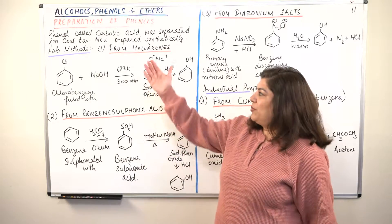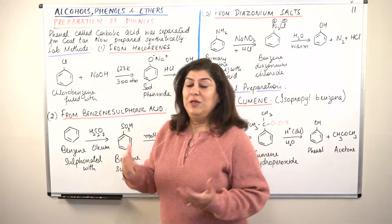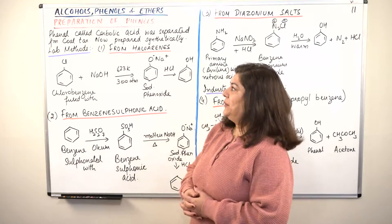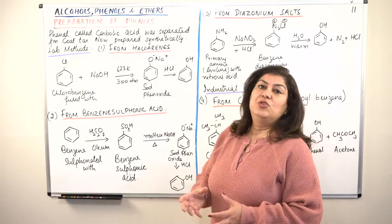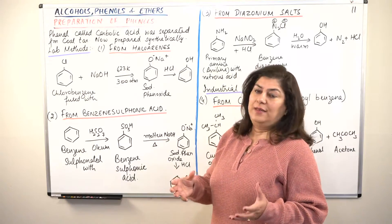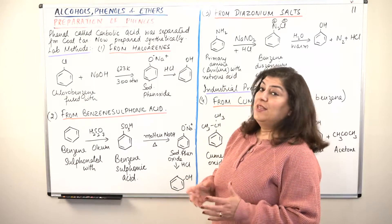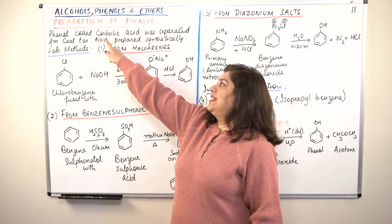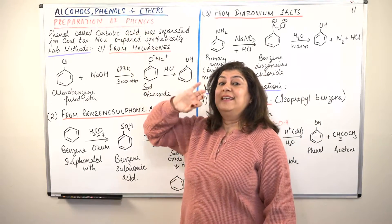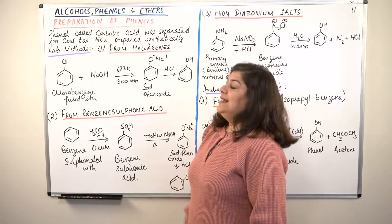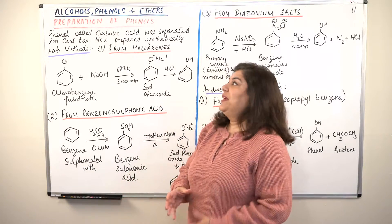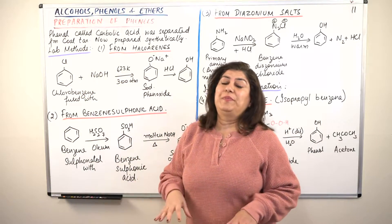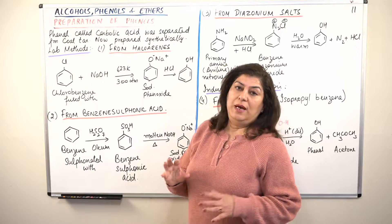But before we come to the methods of preparation, let us just remember what it was called in the past and what was the source of phenol earlier. Phenol is known as carbolic acid - that is its common name and also its earlier name. As the name suggests, it has acidic character, and initially it was separated from coal tar, but now the methods of preparation of phenol are different.